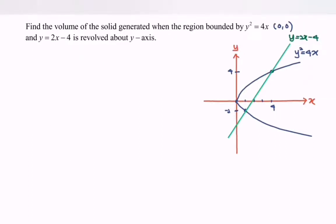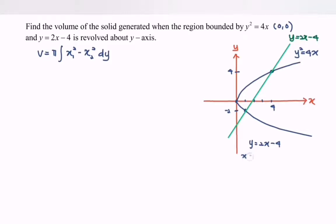Referring to the question — revolve about the y-axis — the formula for volume is v equals pi times the integral of x sub 1 squared minus x sub 2 squared with respect to y. We need to express x in terms of y. From y equals 2x minus 4, we get x equals (y plus 4) over 2. From y squared equals 4x, we get x equals y squared over 4.